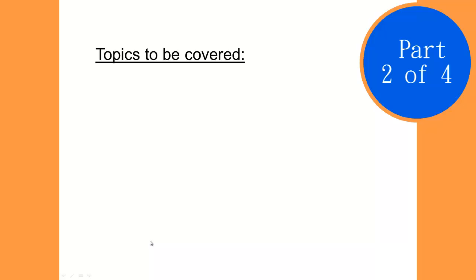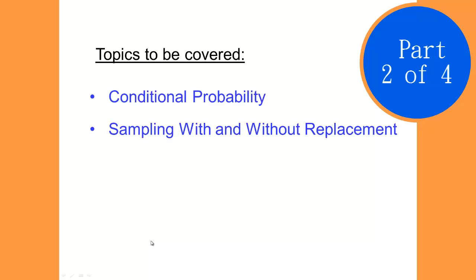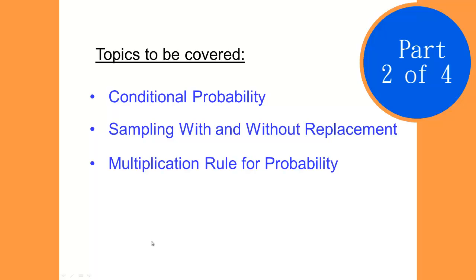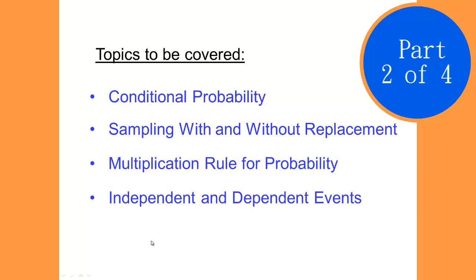The topics that we cover in this series include conditional probability, sampling with and without replacement, multiplication rule for probability, and independent and dependent events.